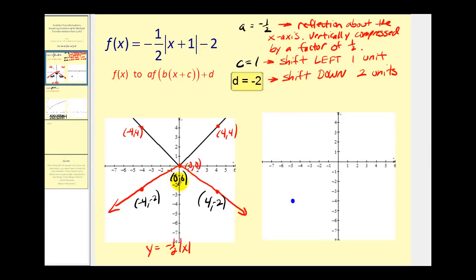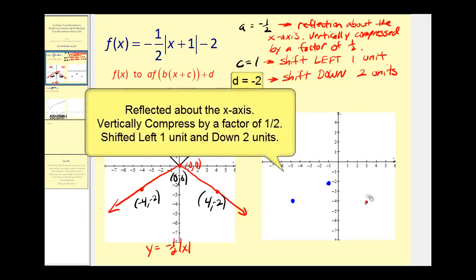For the point zero comma zero, subtracting one from x gives negative one, and subtracting two from y gives negative two — so the point negative one comma negative two. Then for four comma negative two, subtracting one gives three, and subtracting two gives negative four — the point three comma negative four. This is the final graph of the original function: reflected, vertically compressed, shifted left one unit, and shifted down two units.